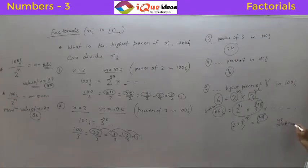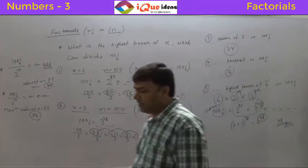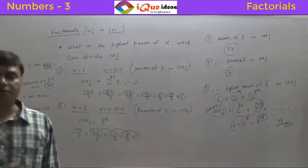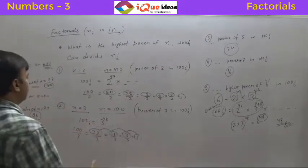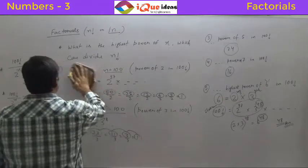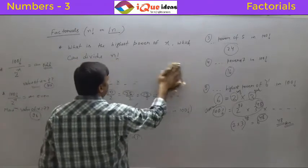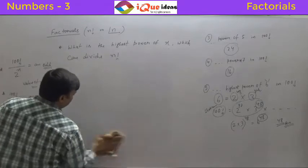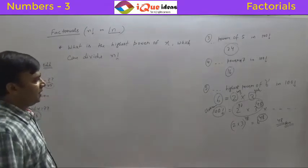To summarize: to create a 6 we need a 2 and a 3. As many pairs of 2 and 3 as we can get from 100 factorial — that will be the power of 6 which divides 100 factorial, and the answer is 48.